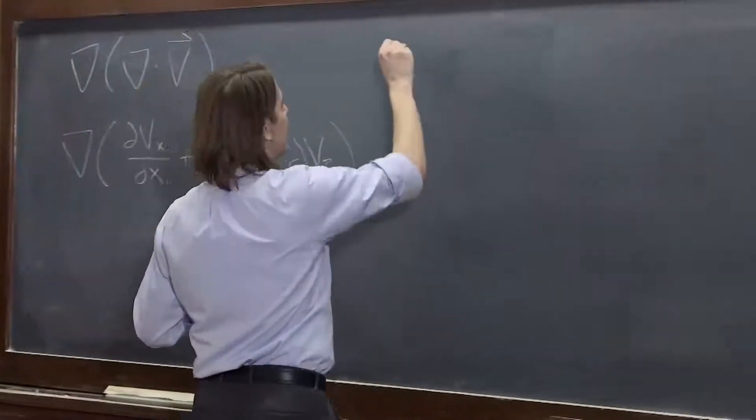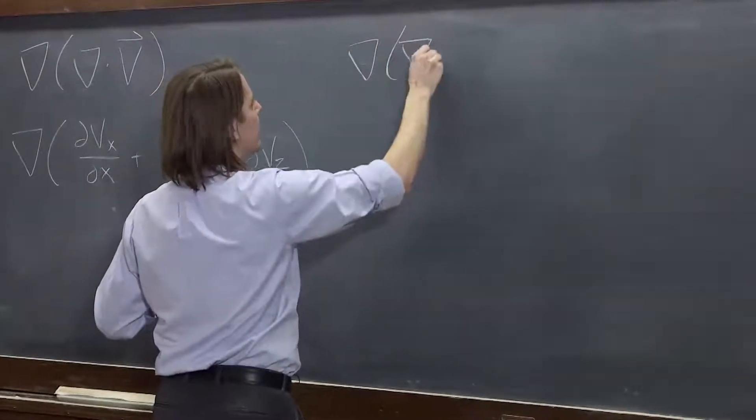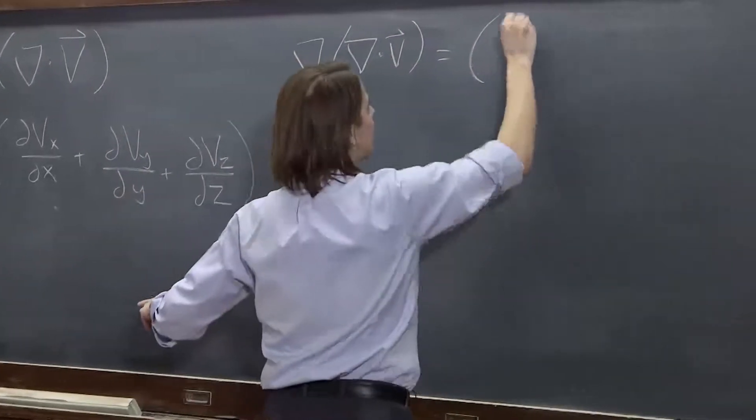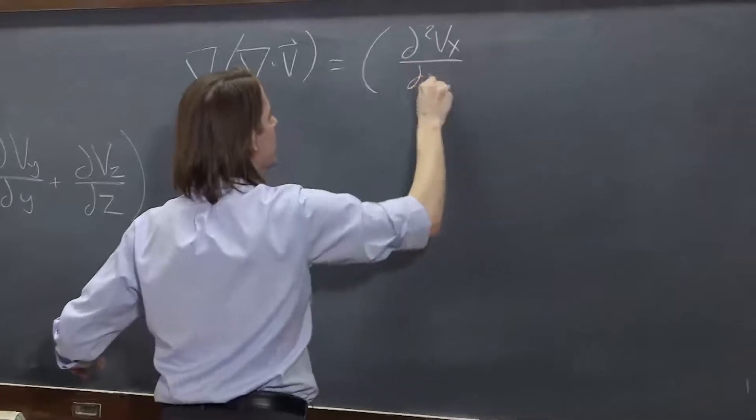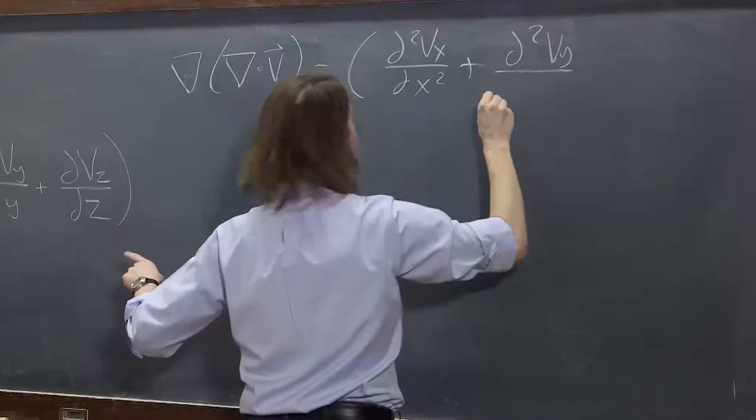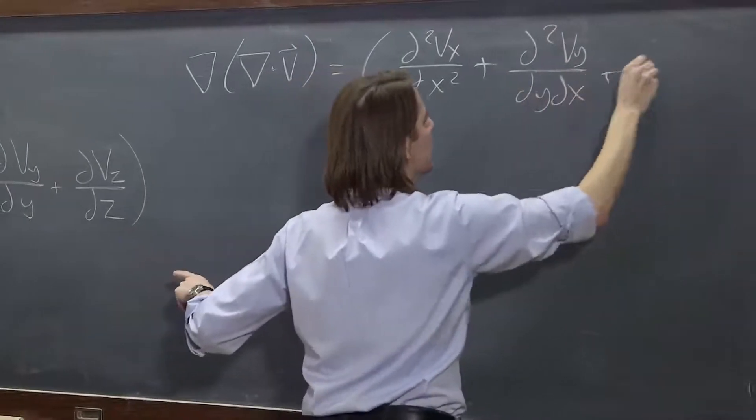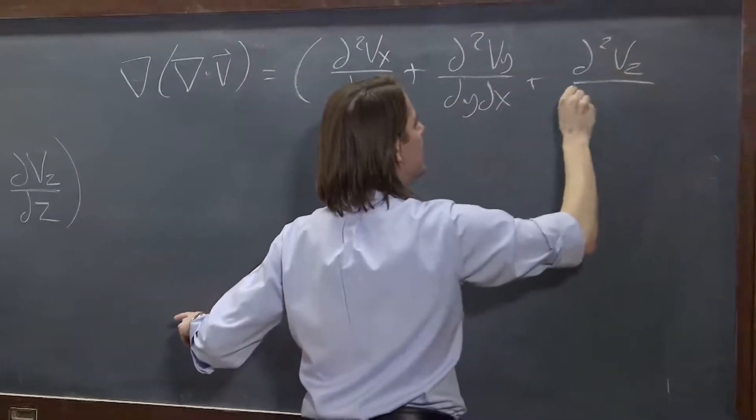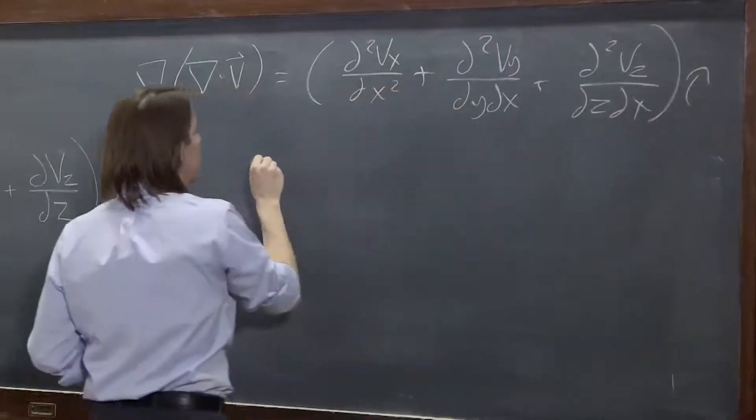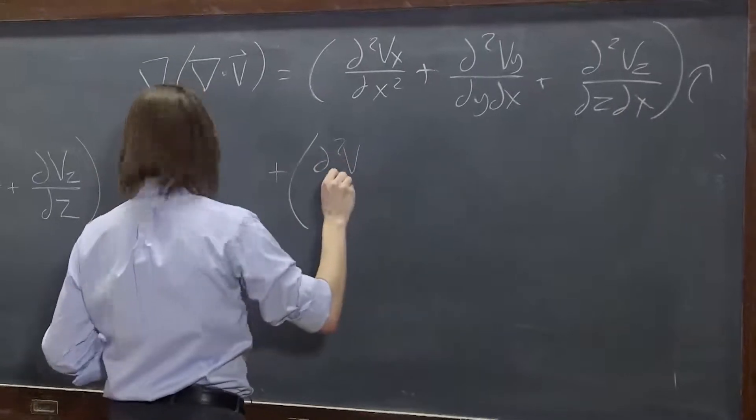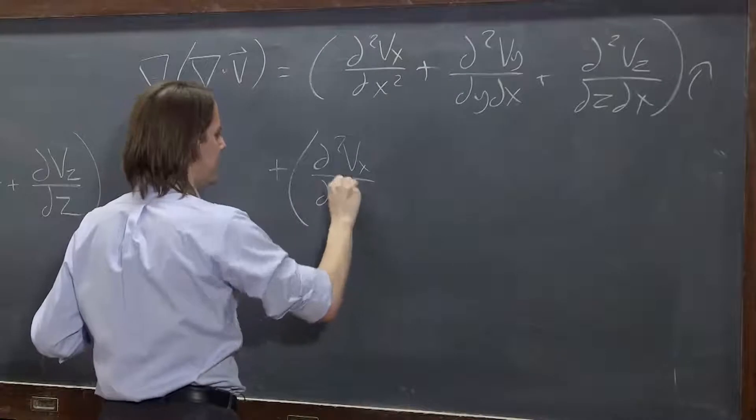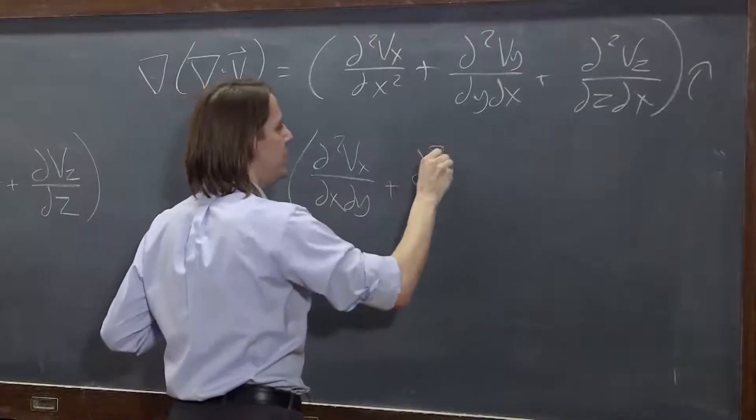So it looks like this, then. Del of del dot v, the whole thing, will be d2 vx dx2 plus d2 vy dx dy plus d2 vz dx dz on the i hat, plus d2 vx dx dy plus d2 vy dy2 plus d2 vz dz dy on the j hat.